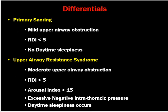Differential diagnoses include primary snoring, where the patient just snores without an apnea syndrome — mild upper airway obstruction with RDI less than 5 and no daytime sleepiness. Upper airway resistance syndrome involves moderate upper airway obstruction, RDI less than 5, respiratory disturbance index more than 15, excessive negative intrathoracic pressure, and daytime sleepiness.